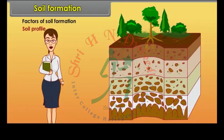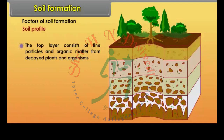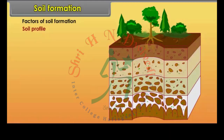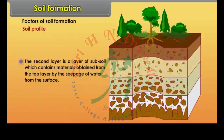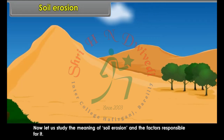Soil Profile: each type of soil has a well-developed vertical section called the Soil Profile. The top layer consists of fine particles and organic matter from decayed plants and organisms. The second layer is a layer of subsoil.